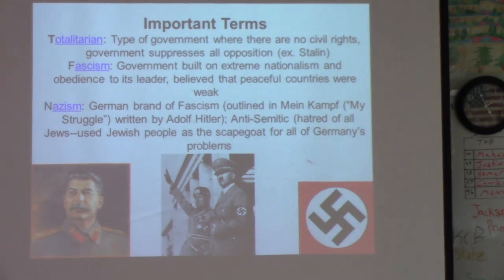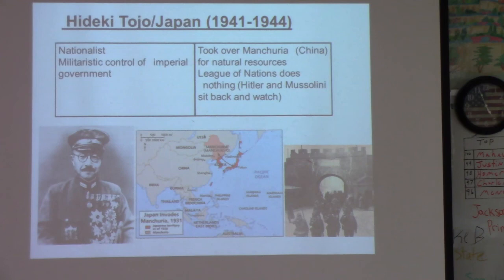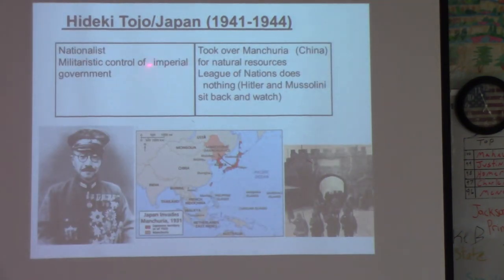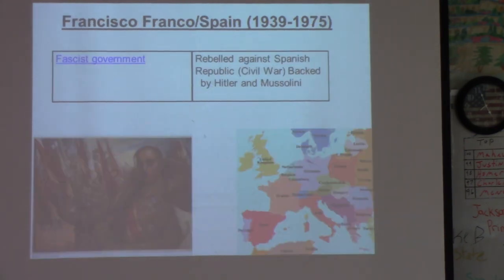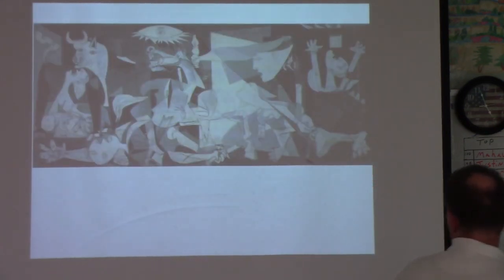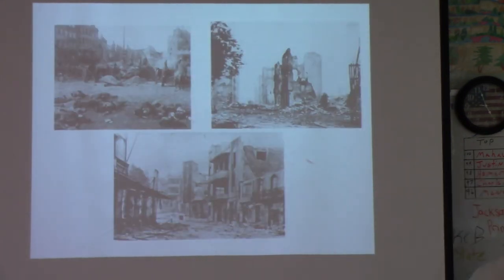Nazism is a brand of fascism that Hitler discusses in his book Mein Kampf, where he hates anybody who's not German — especially the Jews, who become the scapegoat for Germany's problems — and this leads into World War II. There's also a fascist in Italy with Benito Mussolini, and over in Japan another in Hideki Tojo, who would lead everybody into war.